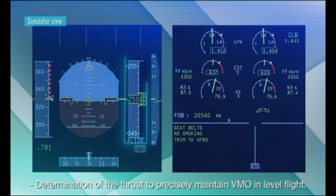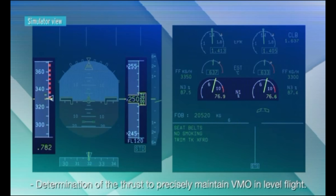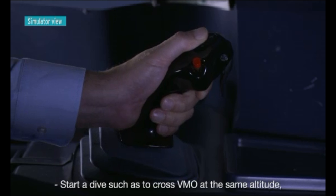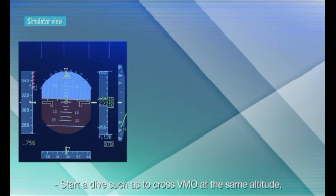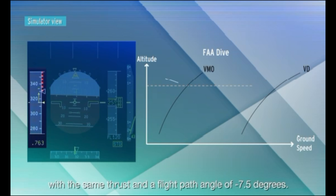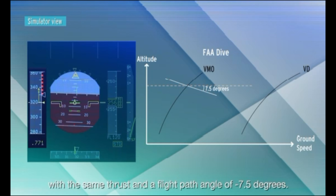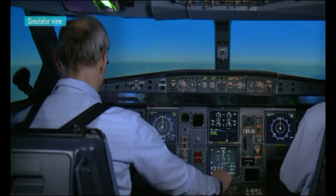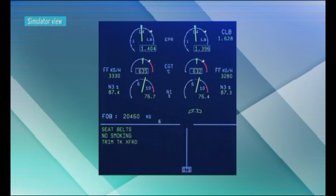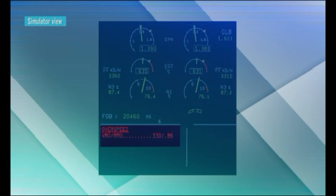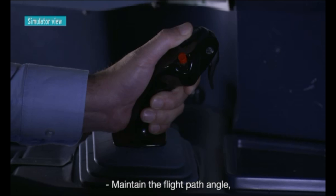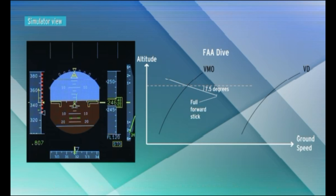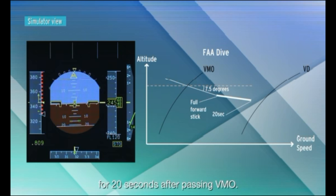First, determination of the thrust to precisely maintain VMO in level flight. Then start a dive such as to cross VMO at the same altitude, with the same thrust and a flight path angle of minus 7.5 degrees. Maintain the flight path angle — or full forward stick if minus 7.5 degrees cannot be maintained — for 20 seconds after passing VMO.